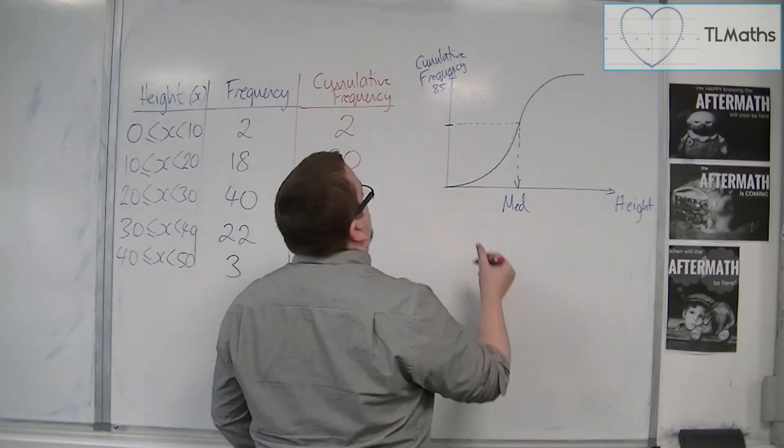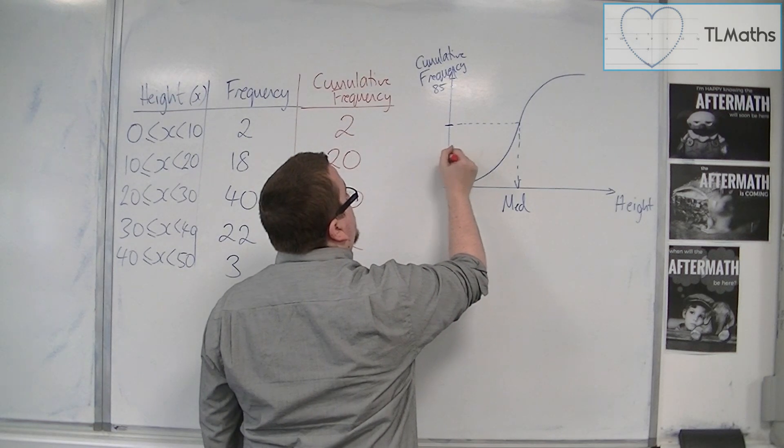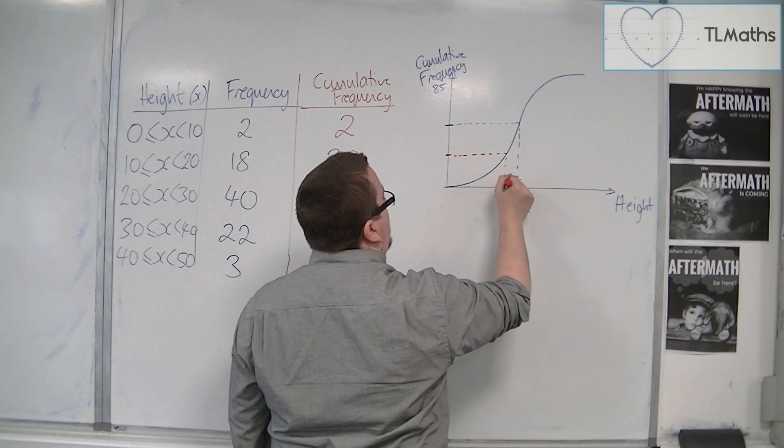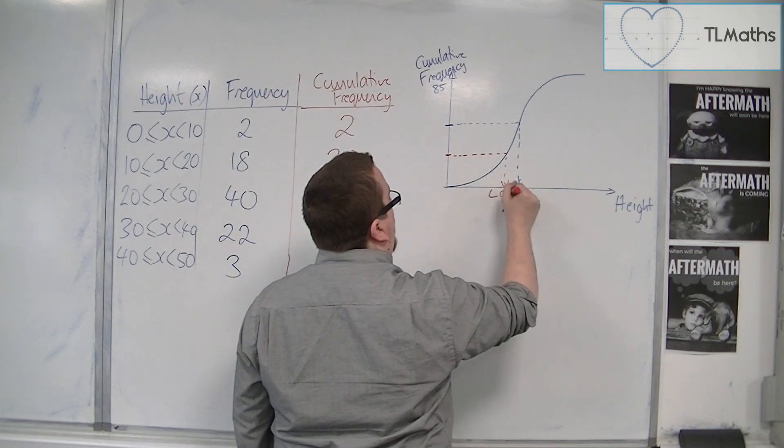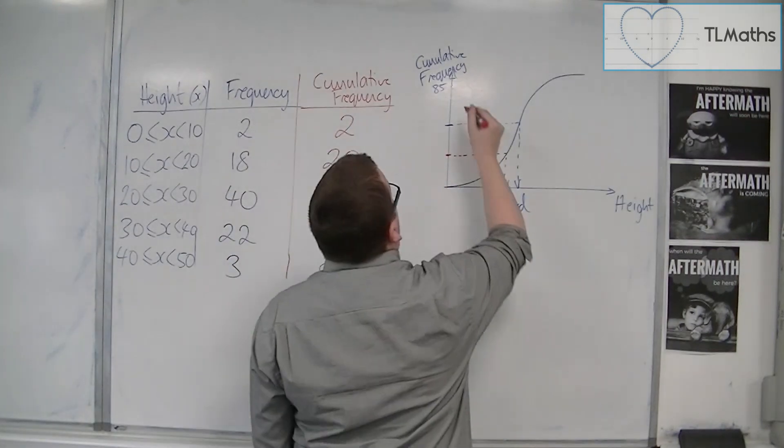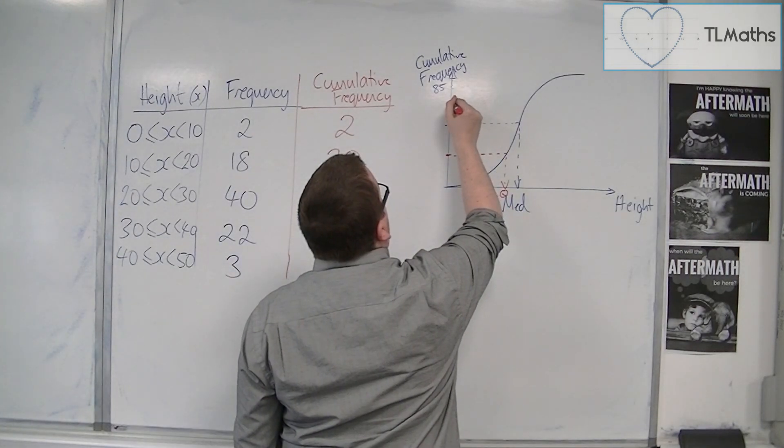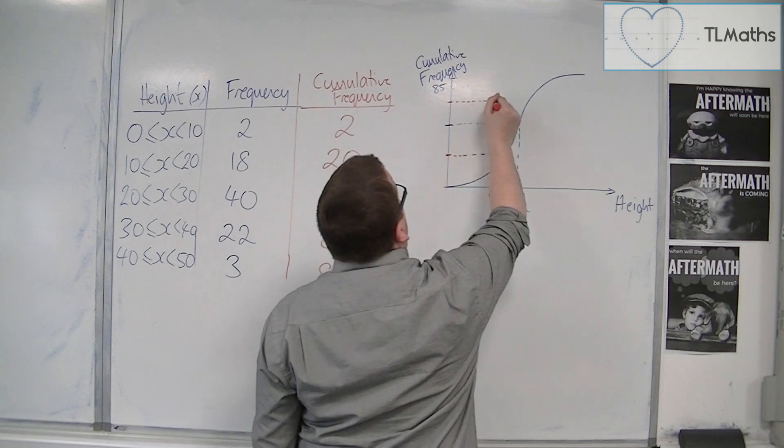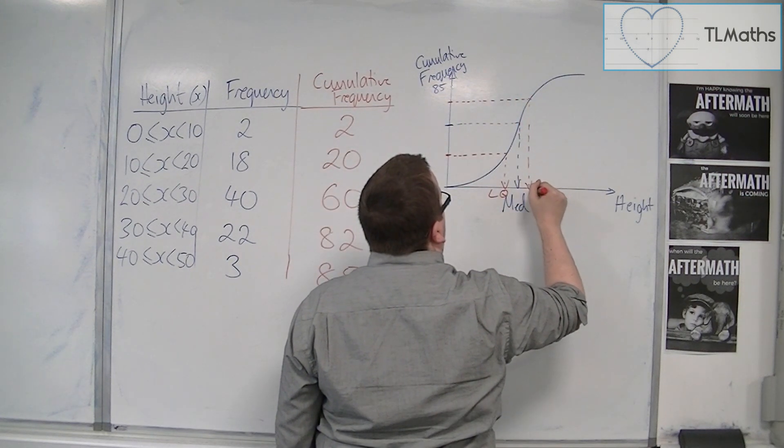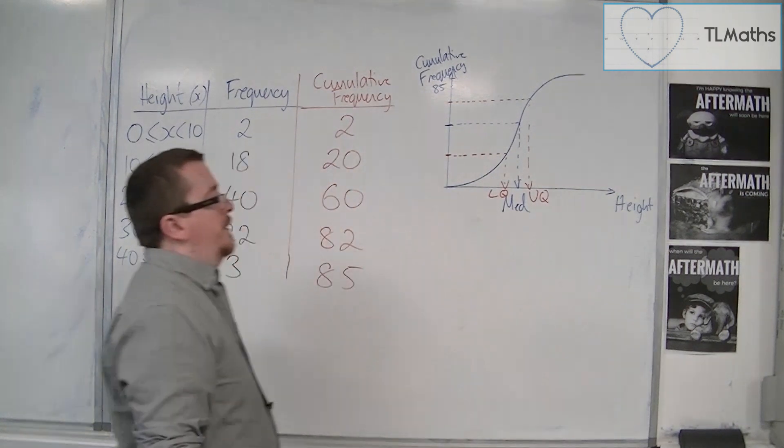Then, you would go for the lower quartile, so the 25th percentile. You'd go along to your curve, and then straight down, and this would be the lower quartile. And then, you might be asked for the upper quartile, which is the 75th percentile. You'd go along to the curve, and then straight down, and that would be your upper quartile.